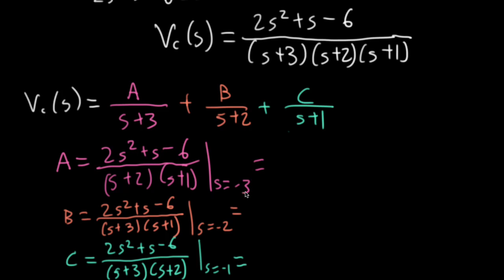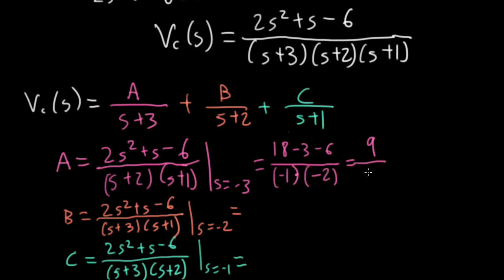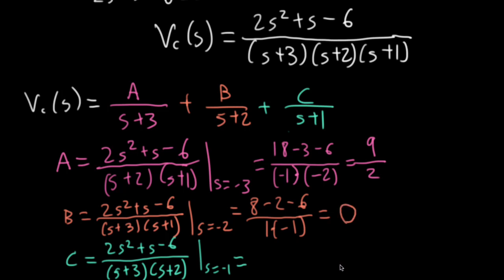For A at S=−3: 2×9=18, then −3−6=−9, numerator is 18−9=9. Denominator: (−3+2)(−3+1) = (−1)(−2) = 2. So A = 9/2. For B at S=−2: 2×4=8, then −2−6=−8, numerator is 8−8=0. Denominator would be (1)(−1)=−1. So B=0. That feels weird — we'll want to think about that.